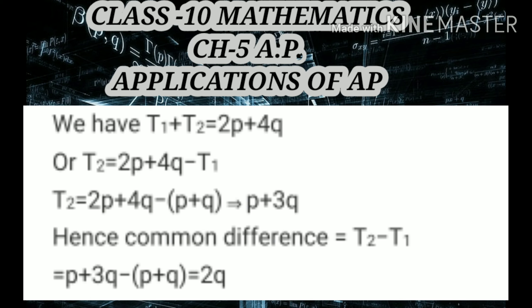To find the common difference, we subtract the first term from the second term, that is T2 minus T1. The value of T2 is P + 3Q and the value of T1 is P + Q. When we subtract them, we get 2Q. So the common difference is 2Q.